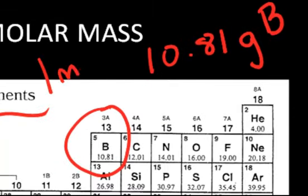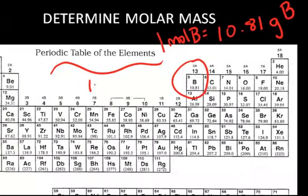So the molar mass is that one mole of boron equals 10.81 grams of boron. And typically, we write it like this, 10.81 grams of boron per mole, in this case, of boron.